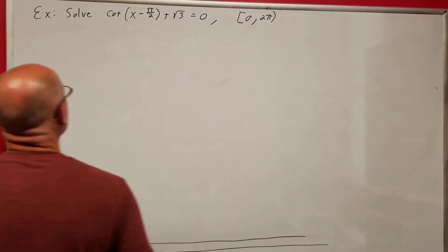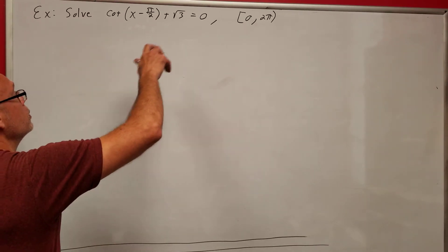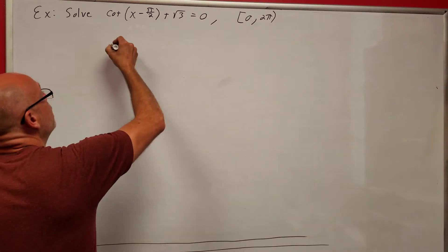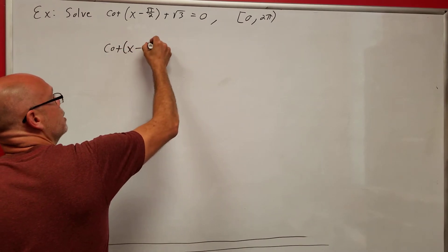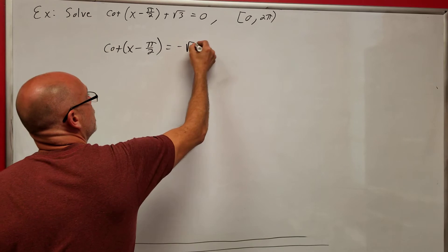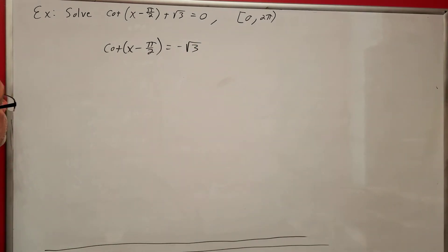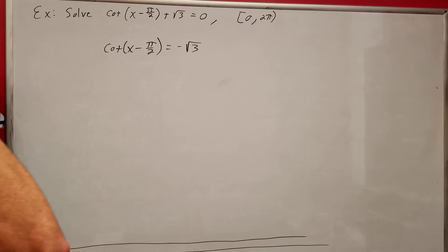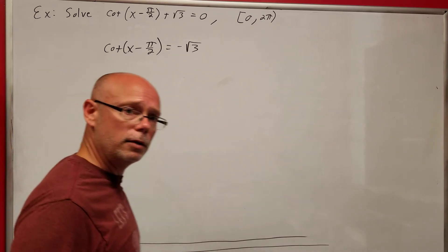Let's take a look at this example: solve cotangent of (x − π/2) + √3 = 0 on the interval from 0 to 2π. I'm going to subtract √3 from both sides. So I want to know where cotangent equals negative √3.